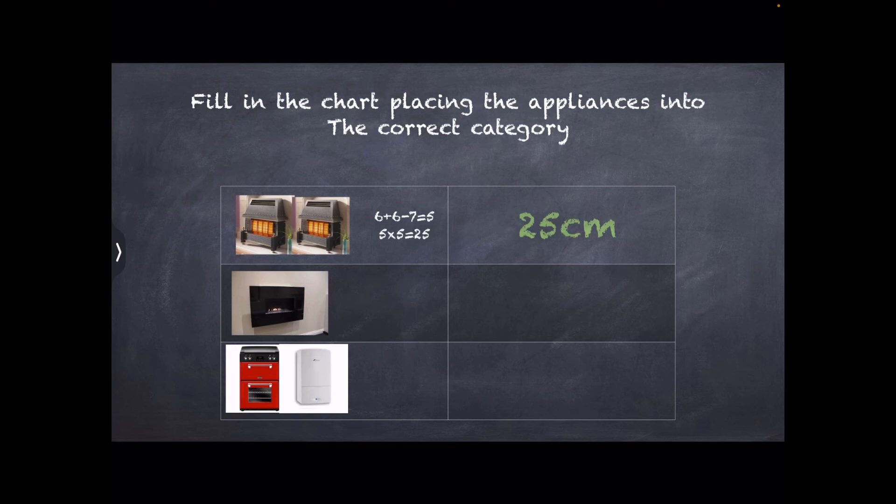So for the flueless space heater, you simply use the flueless chart. And that would tell you that a 3.7 kilowatt fire in a 30 meter squared room requires 155 centimeters squared of ventilation.